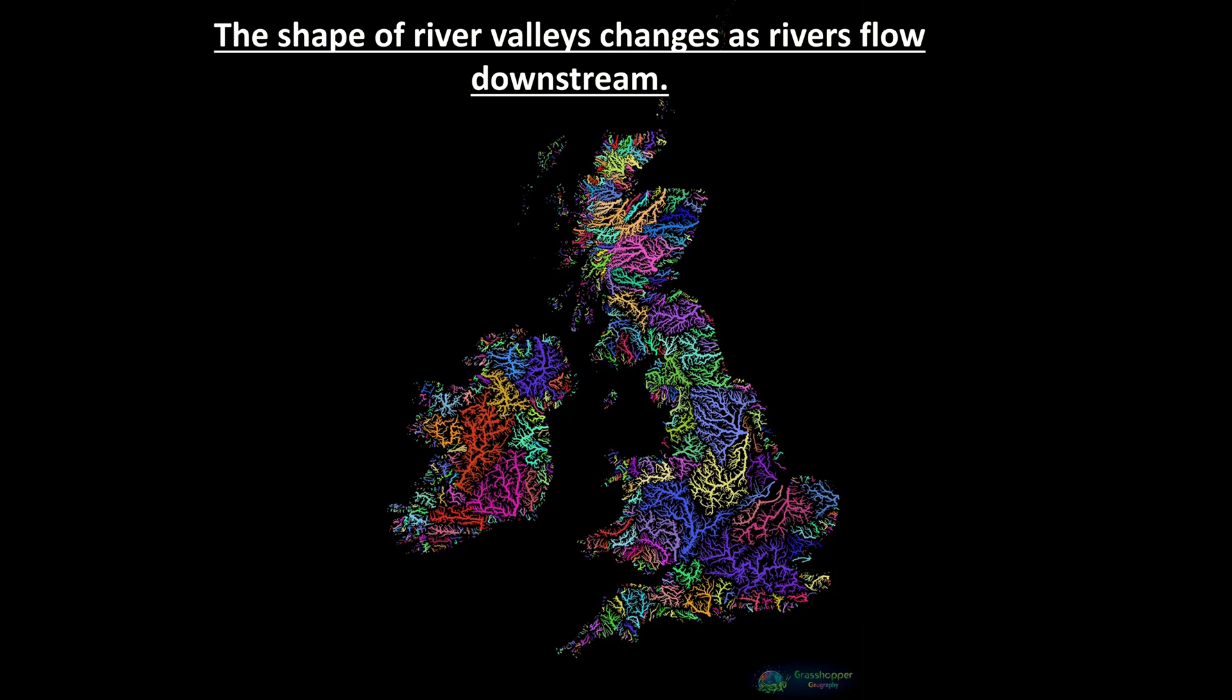Right, so this video is all about how the shape of river valleys change downstream as the river flows from its source area, that's where it starts, to the mouth. And here you can see all the drainage basins of the United Kingdom and the British Isles.